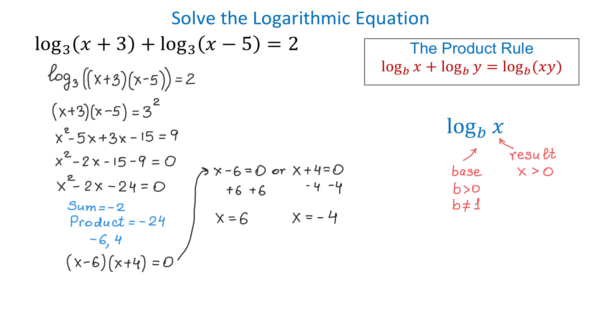If we look at our original equation, we see that each base is positive, and each of the results also has to be positive. The numbers 6 and negative 4 are solutions to this quadratic equation, but let's see if they are solutions to our initial equation.